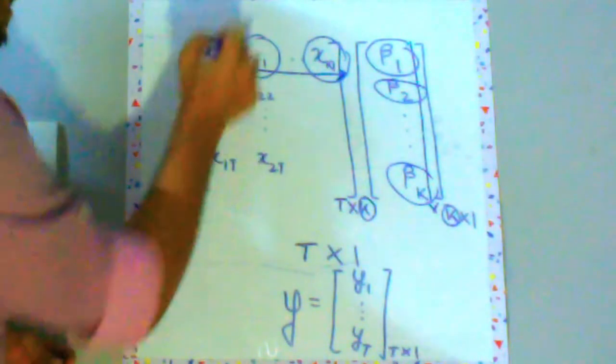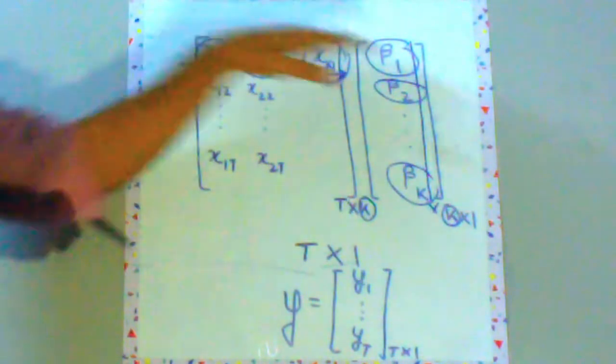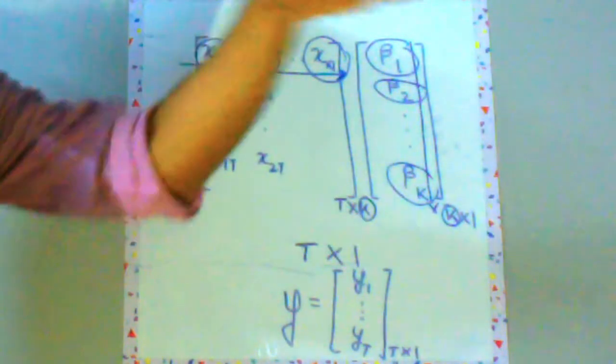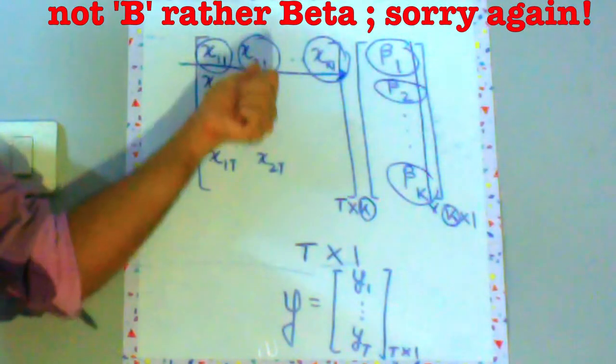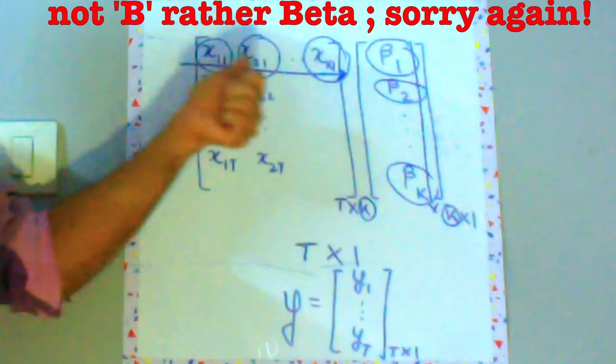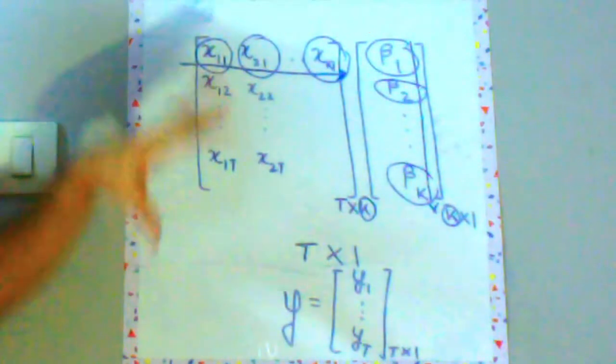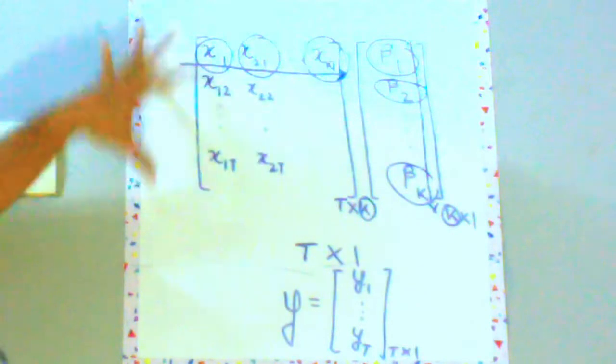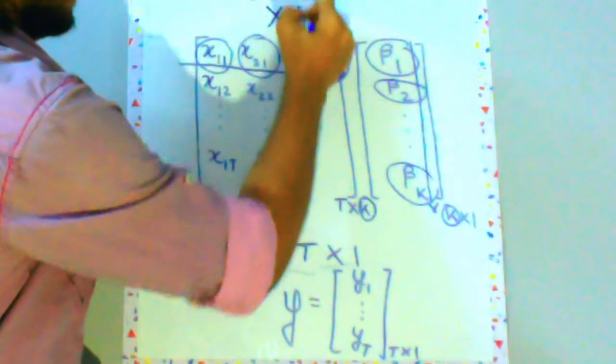So what you will get after multiplication this in the first row is 1 into b1 x21 plus x21 b2 plus x21 b2 plus dot dot dot xk1 bk. So this will be the multiplication which will be giving you x into beta.